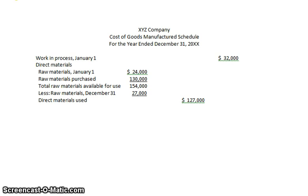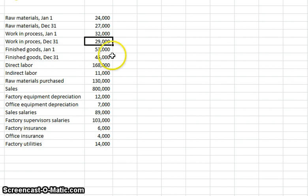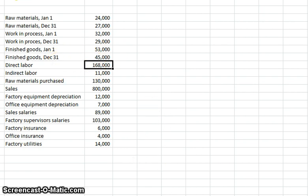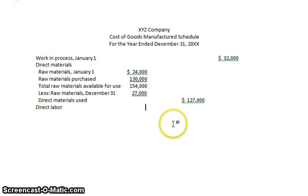We've taken care of direct materials. Now let's look at direct labor, our second manufacturing cost. Looking at the data, direct labor is given explicitly — it was $168,000. So we input that on our schedule under direct materials. Direct labor: $168,000. That was easy.